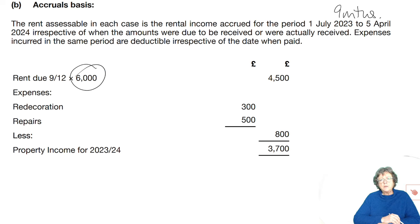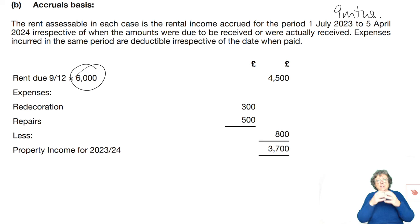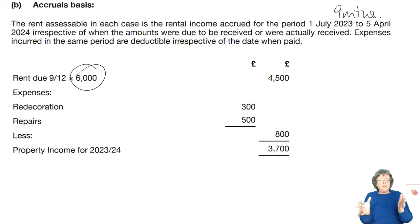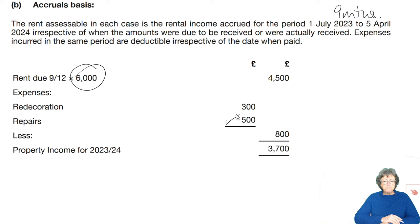So on the cash basis, it's what you actually received on whatever date. On the accruals basis, it's an annual basis and how many months are we looking at. Both expenses are allowed under accruals, so the figure would be slightly different. Let's go back to the chapter.